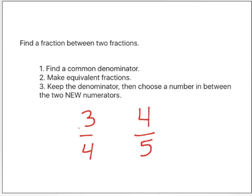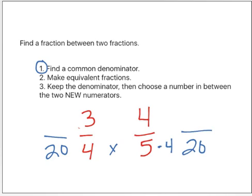Now here's one of the trickiest ones you can get. I need to find a fraction between three-fourths and four-fifths. So I'm going to find a common denominator. Four times five is twenty, so I'm going to use twenty as my common denominator. Now five times four is twenty, so I'm going to take four times four and I get sixteen. On the other side, four times five is twenty, so three times five is fifteen. I just made equivalent fractions.